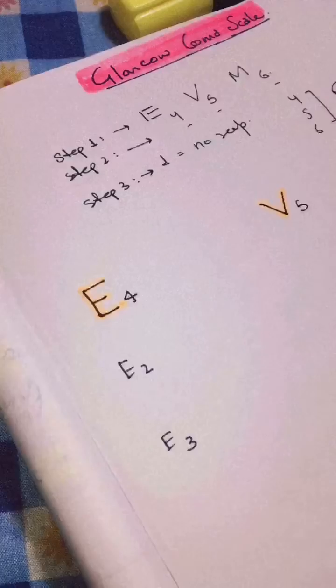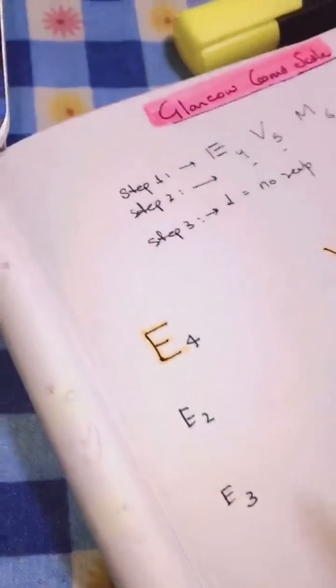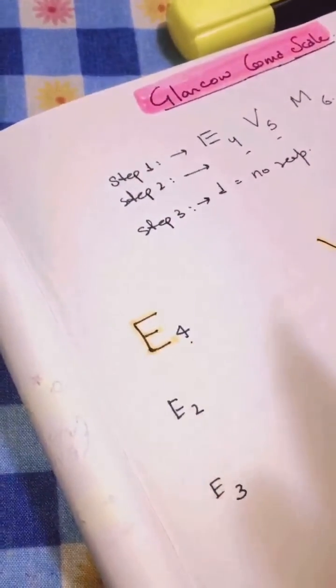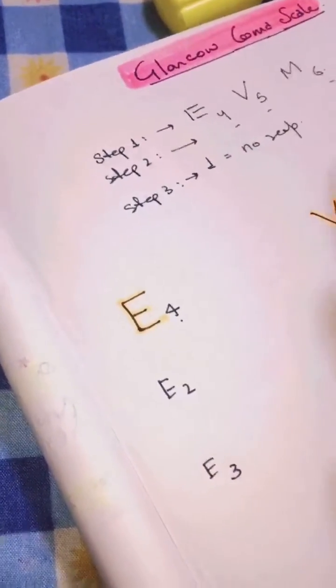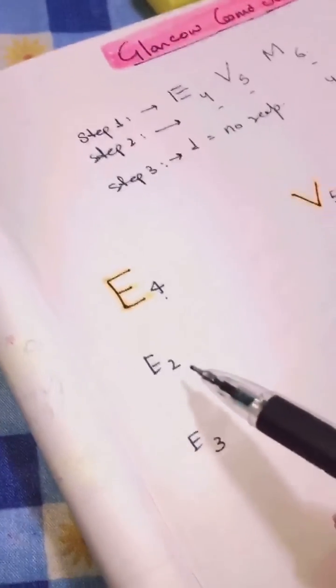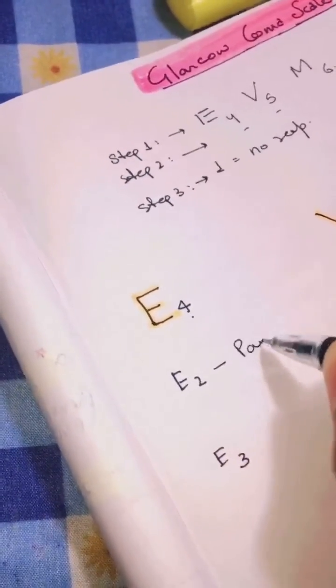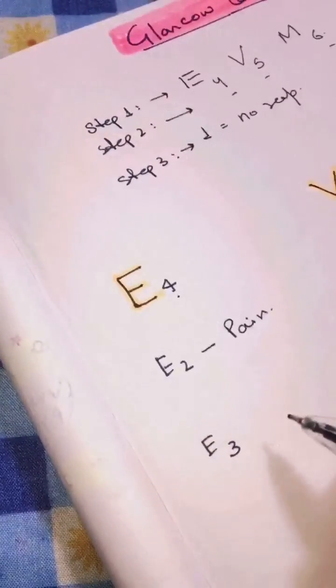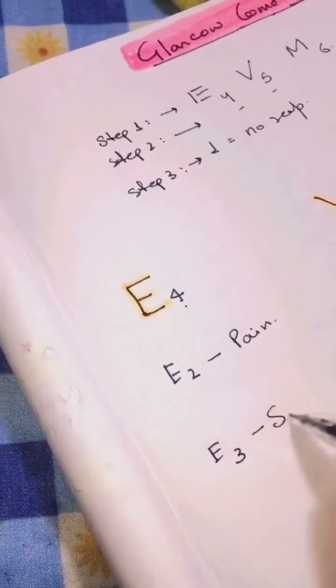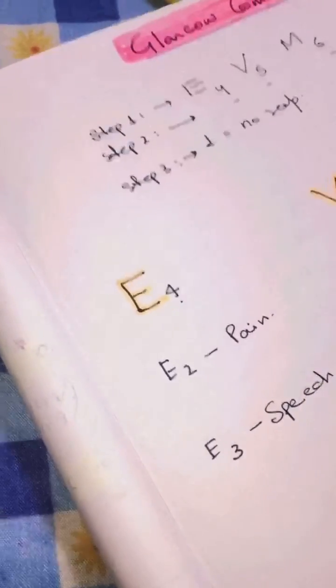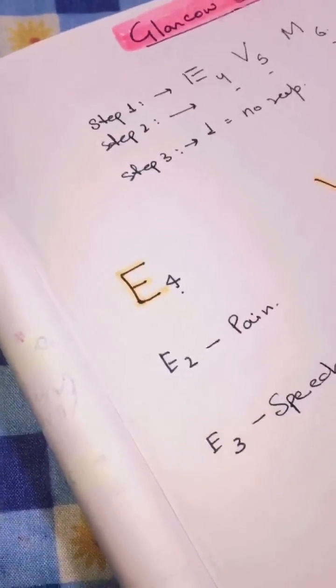Now this will become super easy. E4 - four we already know is normal. One we already know is no response. So all we need to know is what is E2 and E3. E2 is eye opening on pain, and E3 is eye opening on speech. The trick to remember is three - when you write three in verbals, it has two E's. Speech also has two E's.